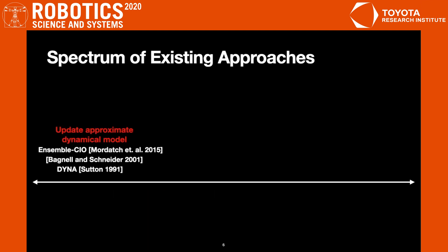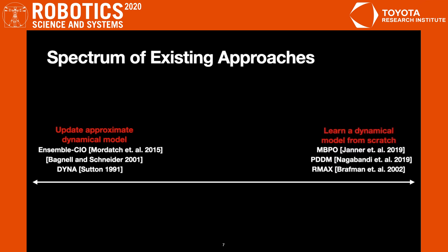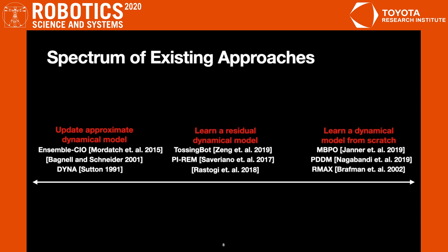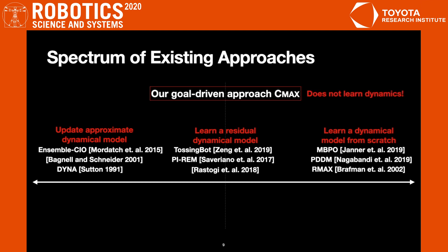Let's take a look at how this problem is tackled in existing literature. On the left of the spectrum of existing approaches, we have works like Dyna that update the approximate dynamics using online executions. On the right, we have model-based reinforcement learning works that learn a new dynamical model from scratch purely from online executions. And in the middle, there are residual approaches that learn a residual dynamical model to compensate for the inaccuracies of the approximate model. Our approach, CMAX, also lies in the middle of the spectrum.